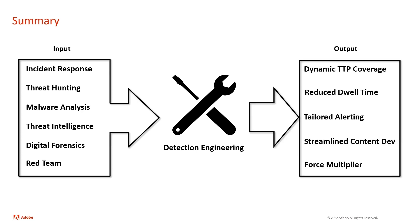Once this process is complete, we see several outputs that detection engineering provides. First is dynamic TTP coverage — threats and adversaries are constantly changing their TTPs. By taking advantage of these different teams and internal research, we're providing a service that's dynamic and constantly staying on top of different TTPs. We're also reducing dwell time — how long an adversary is in your environment before they're detected. With an active, repeatable process, we're reducing that dwell time and hopefully sending alerts to our production queue faster, catching adversaries in our environment as soon as possible.